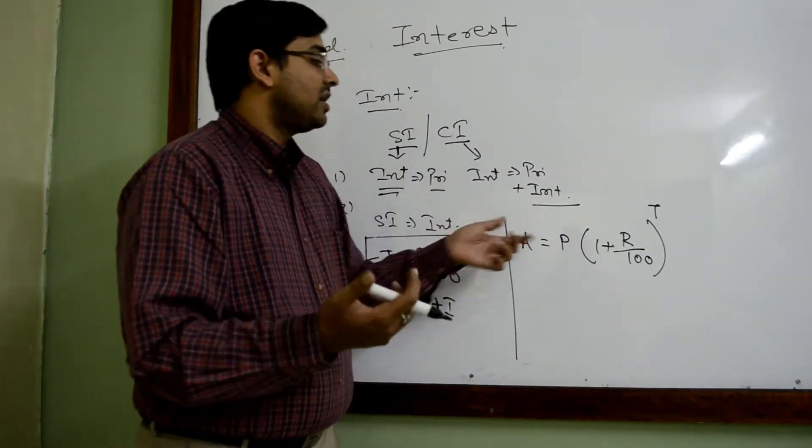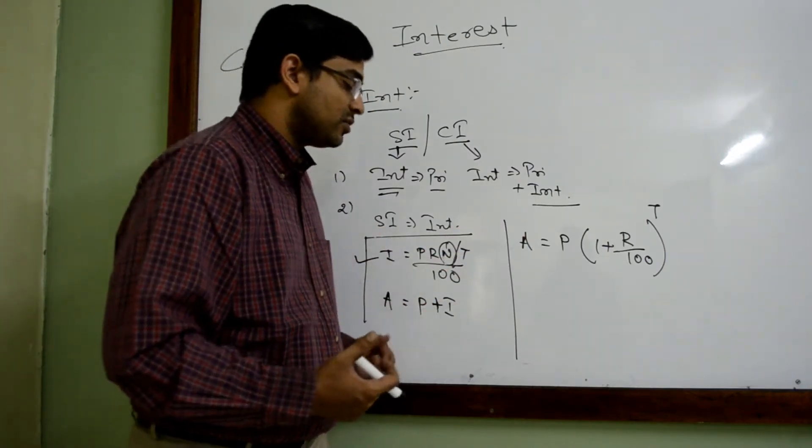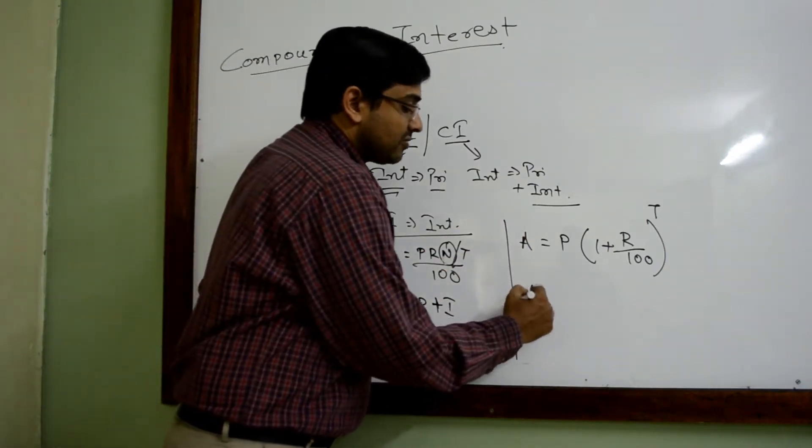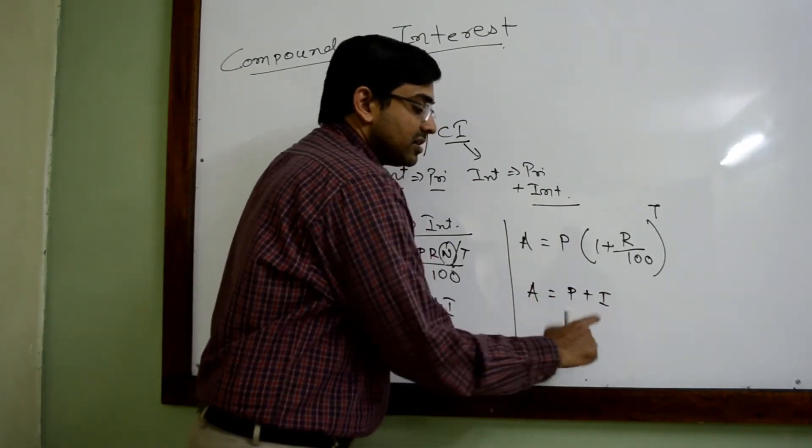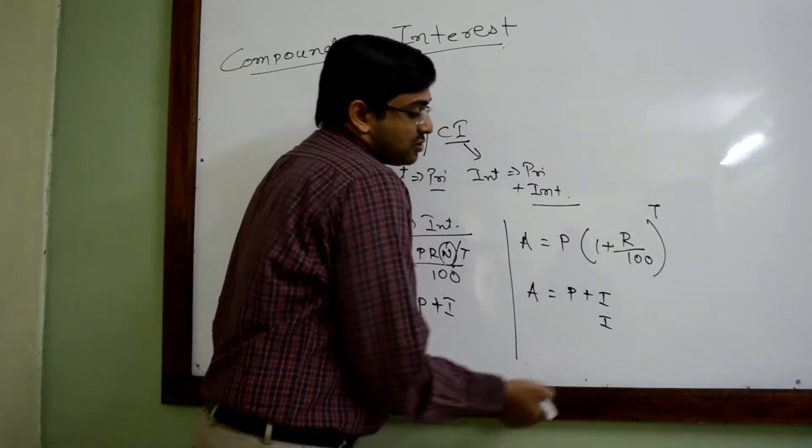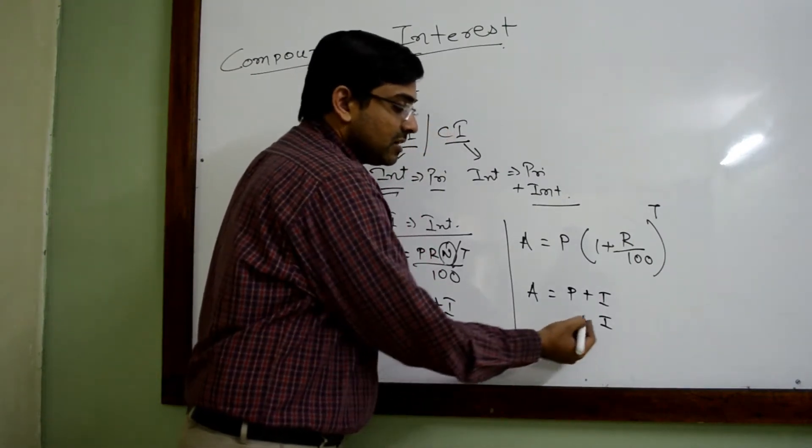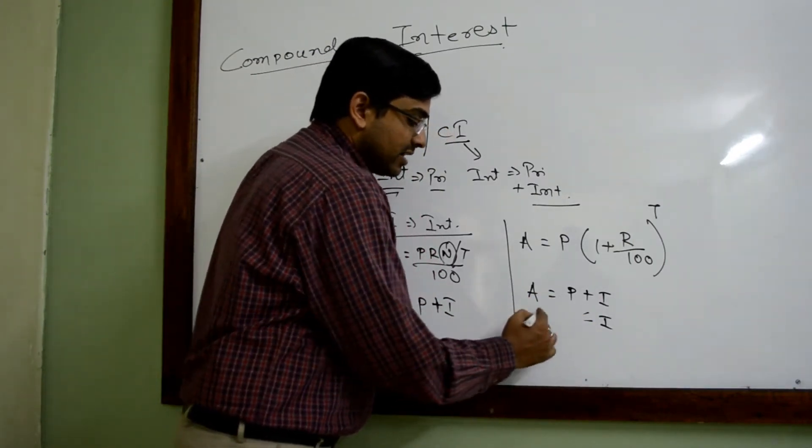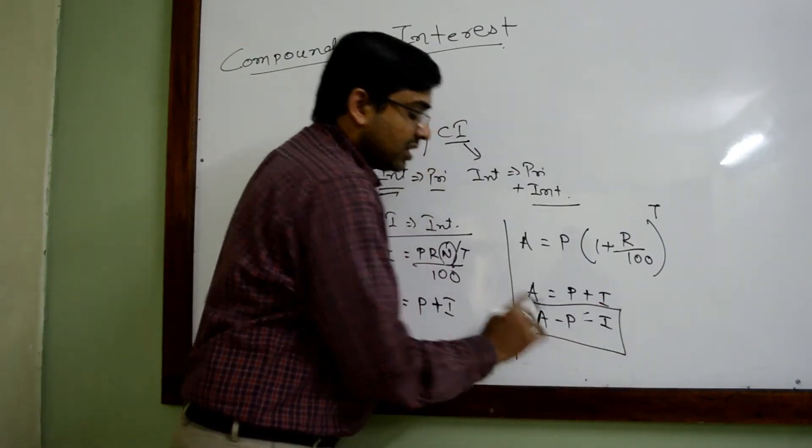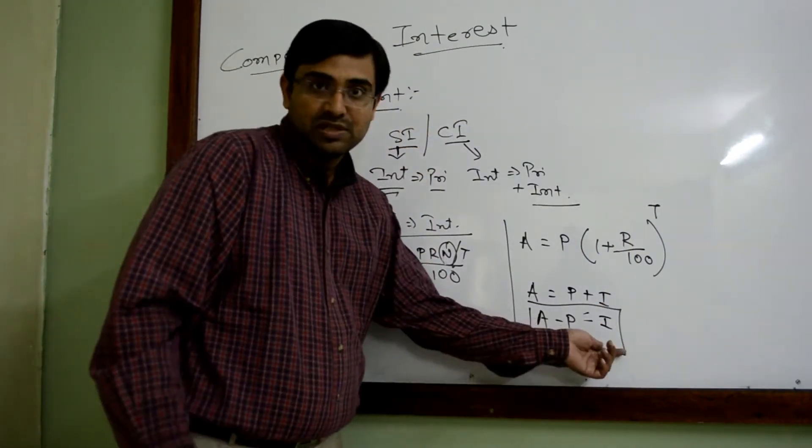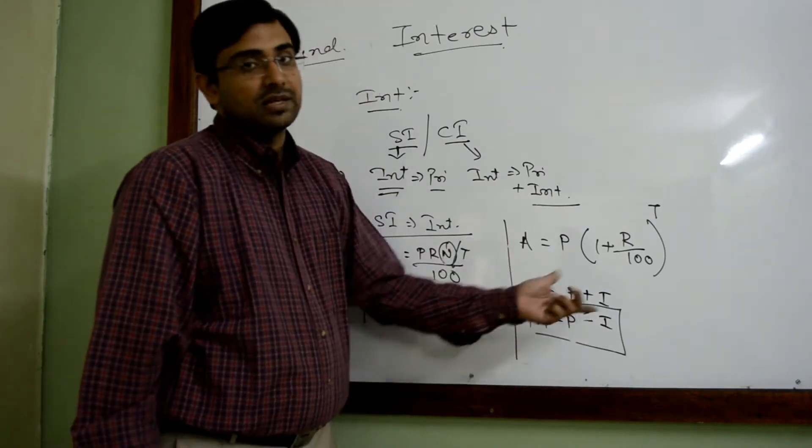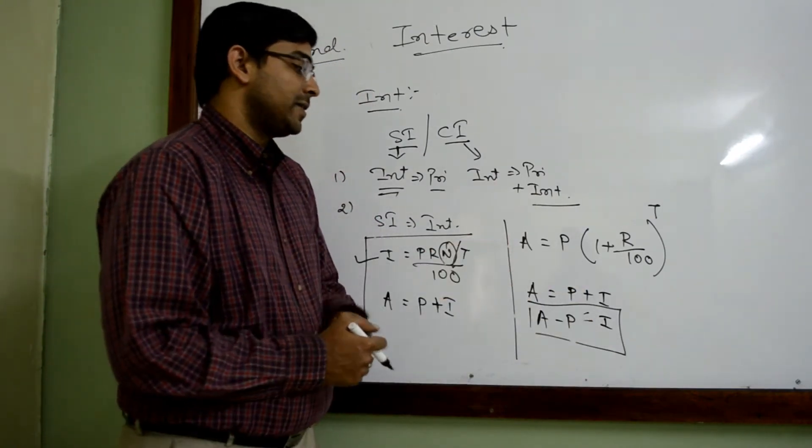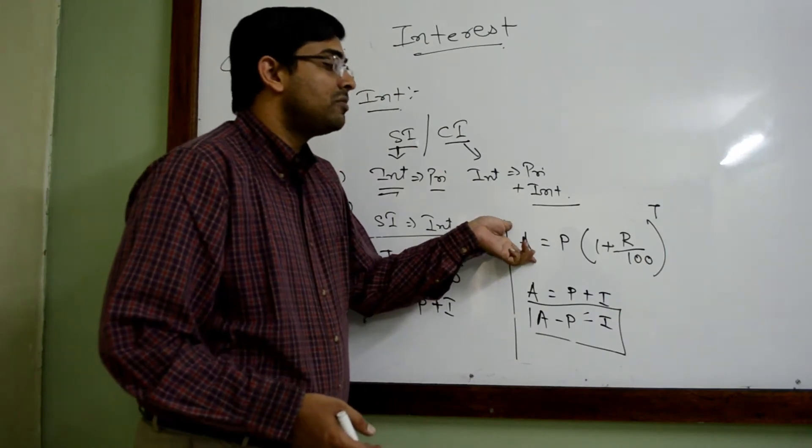The question is, if compound interest is not directly given, then how to find it? Then we have the other formula: amount equals principal plus interest. From here interest can be found. Interest will be nothing but the amount minus principal. So here first amount is found, then from that principal is subtracted, then interest is obtained. This formula is used...